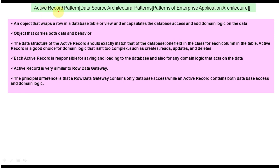Today we will cover the Active Record design pattern. This pattern belongs to data source architectural patterns, which belongs to patterns of enterprise application architecture. First, we will see the explanation of the Active Record design pattern.